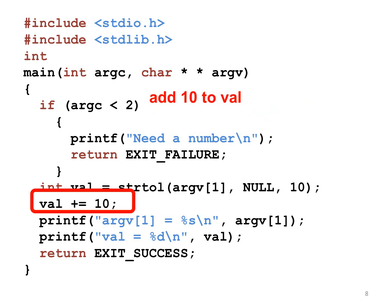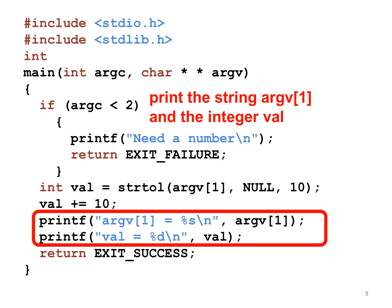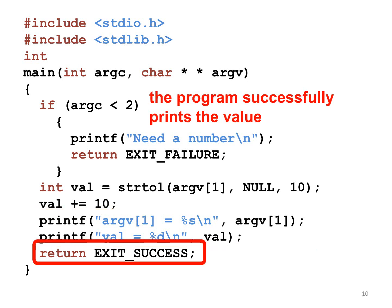The next line adds 10 to val. The next two lines print the string argv[1] and the integer val. The program has successfully converted argv[1] to an integer, stores the value in val, adds 10 to val, and prints the result. Thus, the program returns EXIT_SUCCESS to indicate that it has done the job successfully.